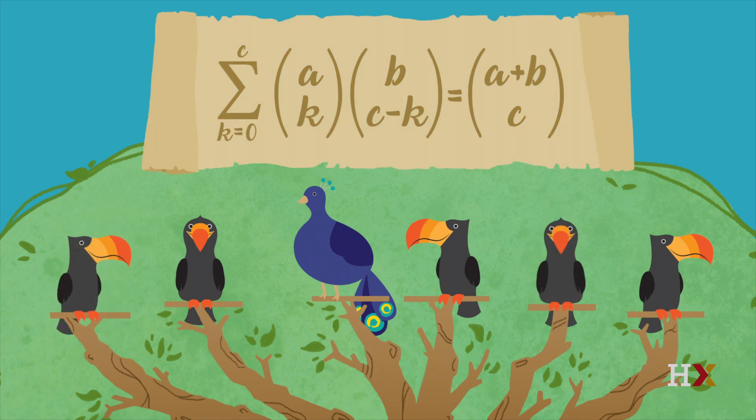Sylvia gave her proof for the case c equal to six because she was looking at a tree with six top branches, but the same idea works for any value of c.